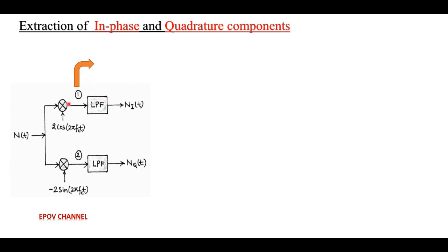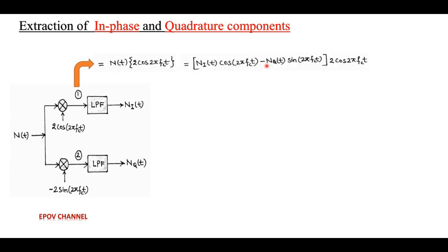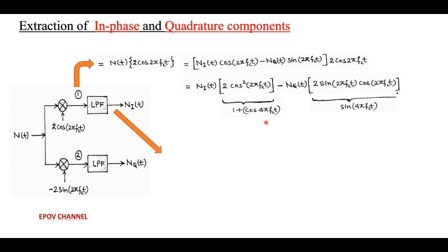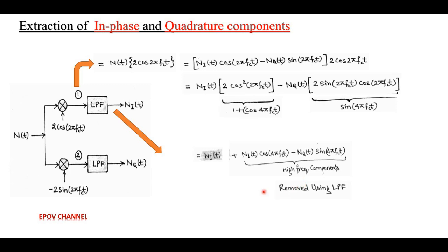First, consider the upper in-phase path. The input of the low pass filter is n(t)·2cos(2πfct). Substituting N(t) = ni(t)·cos(2πfct) − nq(t)·sin(2πfct) and expanding, we get ni(t)·2cos²(2πfct) − nq(t)·2sin(2πfct)cos(2πfct). Using trigonometric identities, the first term gives ni(t)·(1 + cos(4πfct)) and the second gives nq(t)·sin(4πfct). The input to the low pass filter has three terms: the in-phase component plus two high-frequency terms. The low pass filter removes the high-frequency components, so the output is only the in-phase component ni(t).